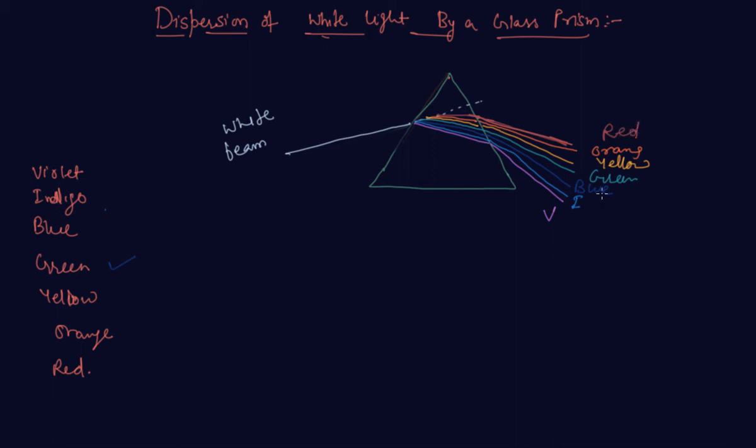So you can see that when white light falls on a prism, it splits into seven colors which are violet, indigo, blue, green, yellow, orange, and red. So the acronym for this is VIBGYOR.